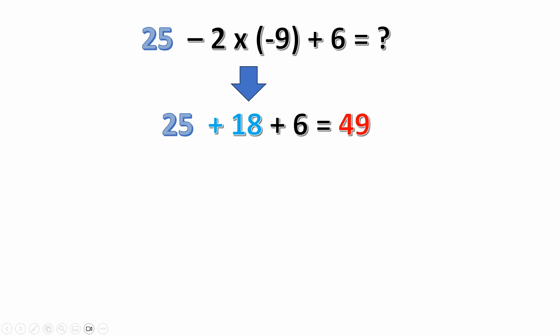25 minus minus 18 is the same thing as 25 plus 18. So it's 25 plus 18 plus 6 and that equals 49. So 49 would be the answer to this problem.